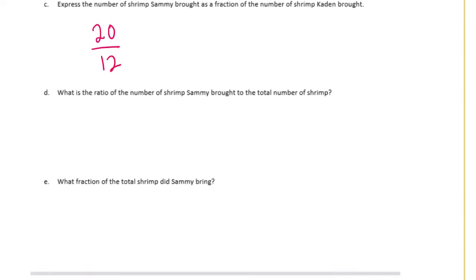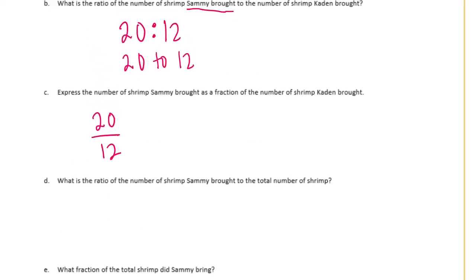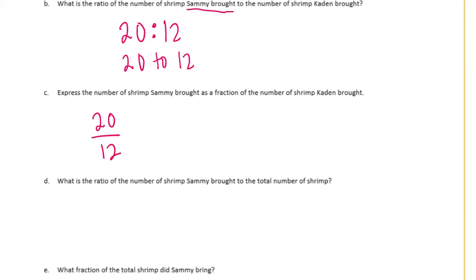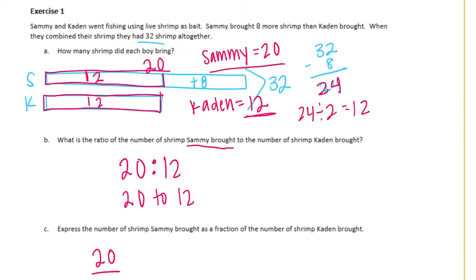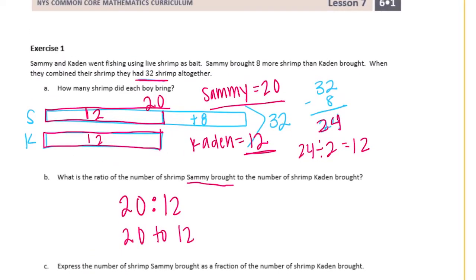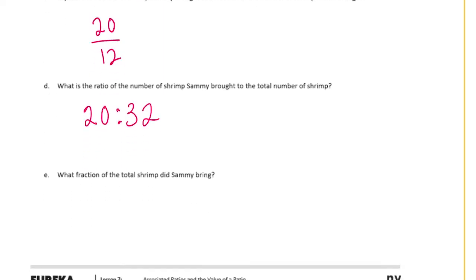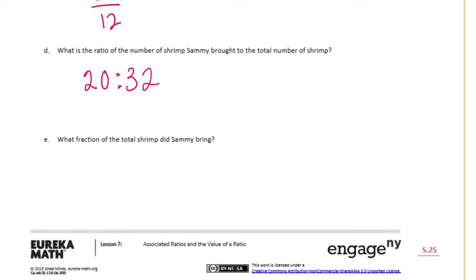What is the ratio of shrimp Sammy brought to the total number of shrimp? Sammy brought 20, and together they had 32, so the ratio is 20 to 32. To express what fraction of the total shrimp Sammy brought, we write 20 out of 32.